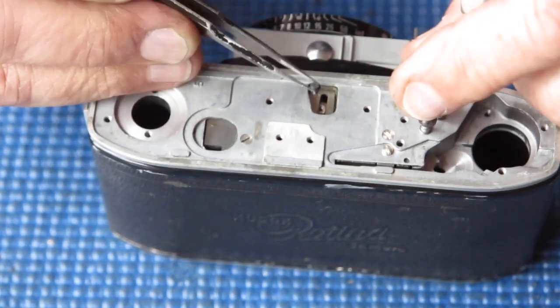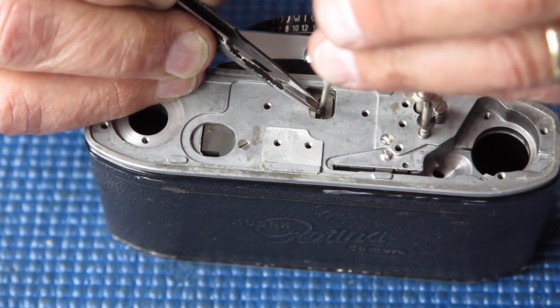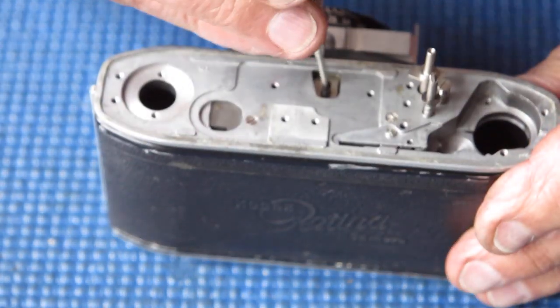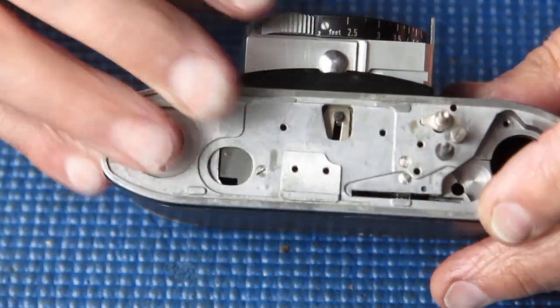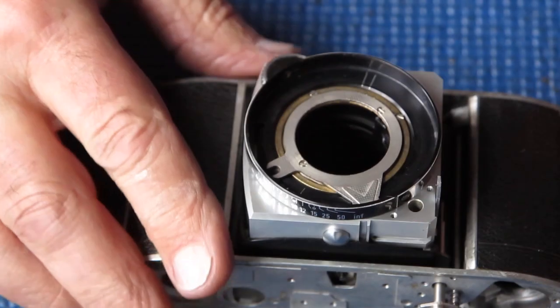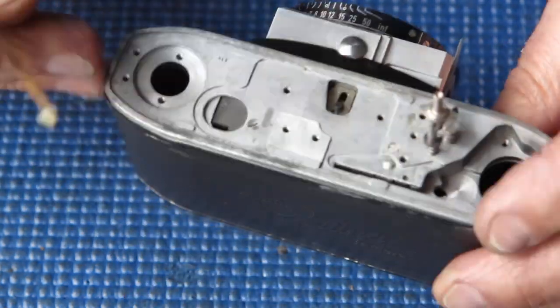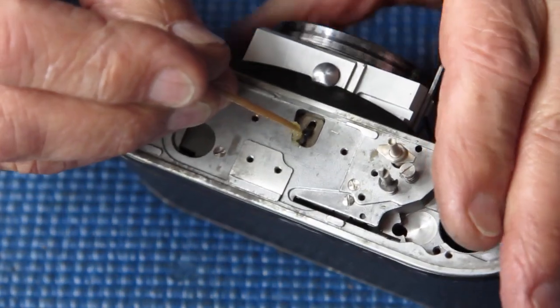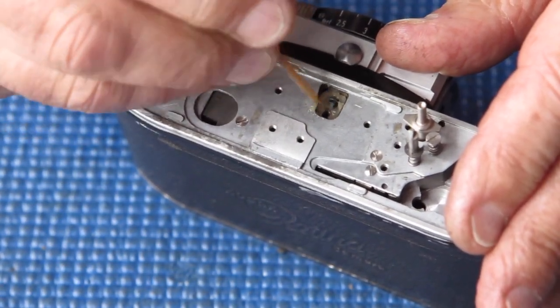Let's see if I can get this screw started correctly. You can see that that stud there moves backwards and forwards as I move the focusing scale. That's our coupling for the range finder. A little bit of synthetic grease. At the top here, I want to put a little bit either side of that pin to lubricate its track.